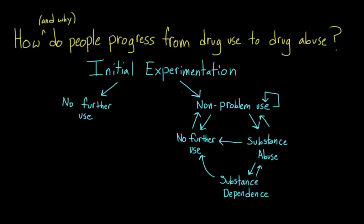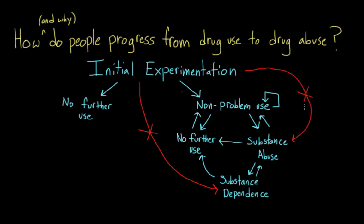Another interesting thing you can notice about this theory by looking at this figure is that it says someone can't move from a single use directly to problem use. Instead, they have to pass through non-problem use first. So this theory is clear in its statement that addiction is a process — it's not something that happens right away.